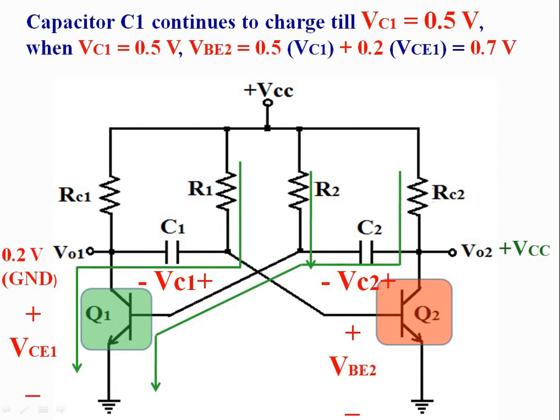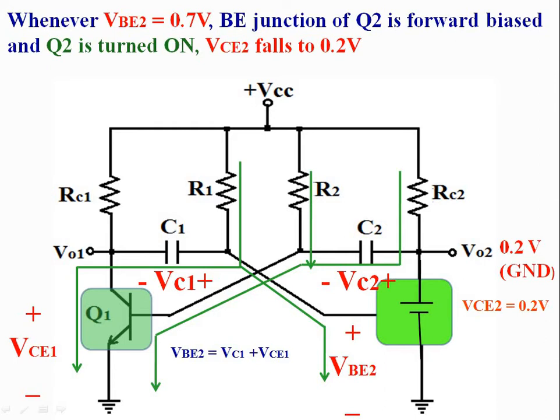Capacitor C1 continues to charge exponentially till VC1 is equal to 0.5V. When VC1 is equal to 0.5V, the total voltage between base and emitter of transistor Q2 is equal to 0.5V plus 0.2V, which equals 0.7V. Applying KVL for the loop consisting of transistor Q1, capacitor C1, and the base-emitter junction of transistor Q2, we find that VBE2 equals VCE1 plus VC1. When VBE2 is equal to 0.7V, the base-emitter junction of transistor Q2 is forward biased and transistor Q2 is turned on.